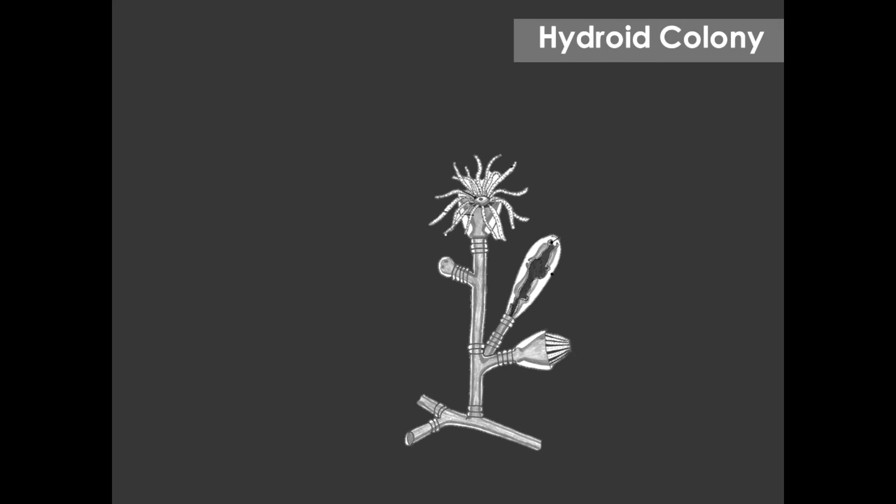Polyps consist of a horizontally branching root-like stolon or hydrorhiza, from which emerge many vertical branching stems called hydrocauli. The colonies are dimorphic, having two types of polyps.